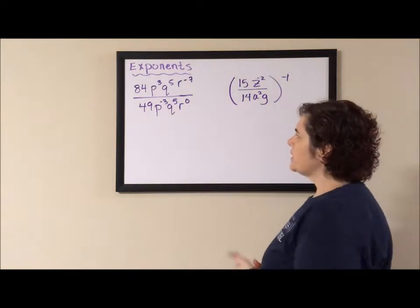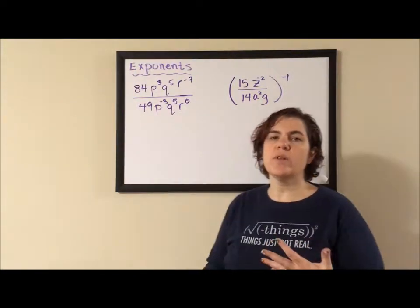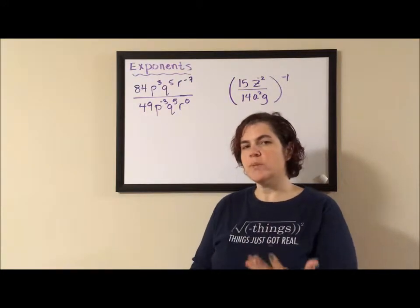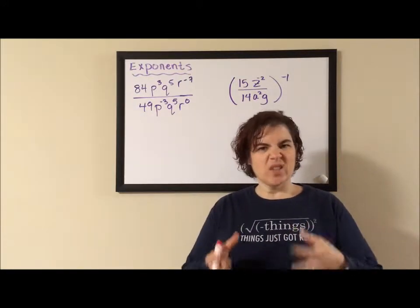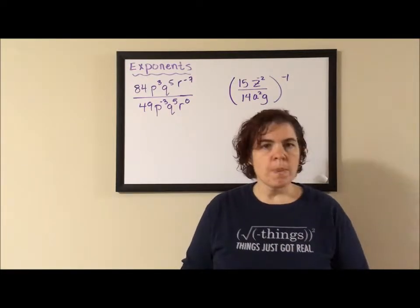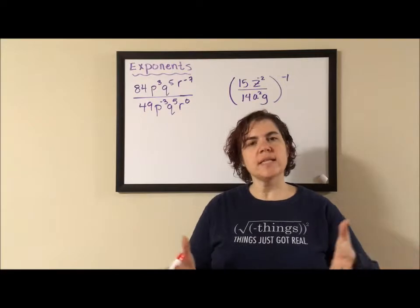My first example has a big fraction that I just need to simplify. When I say simplify, I have to reduce the numbers if it's possible, and remember with the numbers, we are dividing, so it's a fraction that has to be reduced. For the different bases, if there's more than one of the same base, they need to be combined.